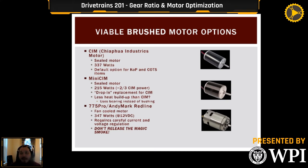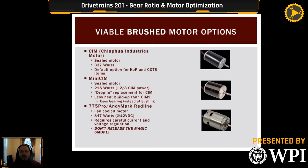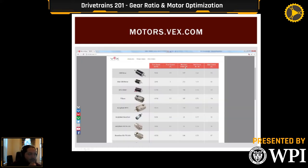Even though the Mini CIM only has 66% of the power, its efficiency advantages give it relatively more power compared to the CIM over the course of a match. The 775 Pro, also known as the RedLine, was another FRC-specific design that a lot of teams started using in drivetrains. But it's a fan-cooled motor, so you have to be mindful of the situations you use it in. It's largely been phased out by the introduction of brushless motors.